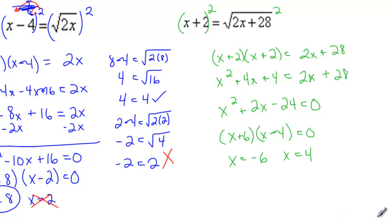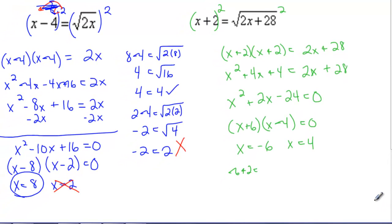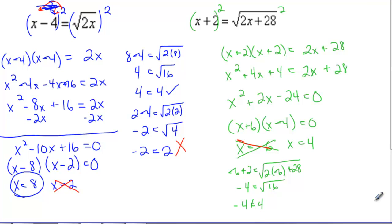What do I have to do now? I plug them back in. If I plug in negative 6, I get negative 6 plus 2 equals the square root of 2 times negative 6 plus 28. That's negative 4 equals the square root of negative 12 plus 28, which is the square root of 16. Negative 4 does not equal 4, so this is an extraneous solution — use the red pen to make sure we don't count that.